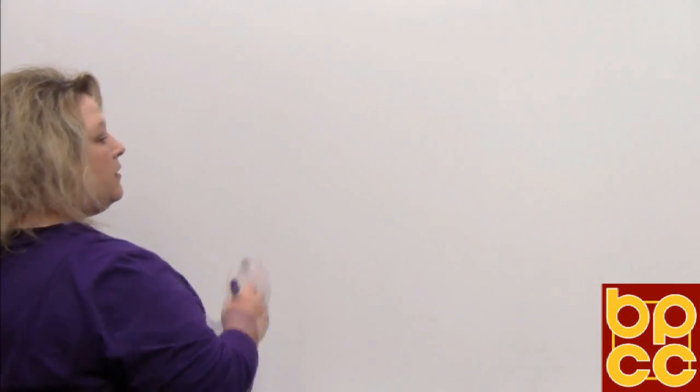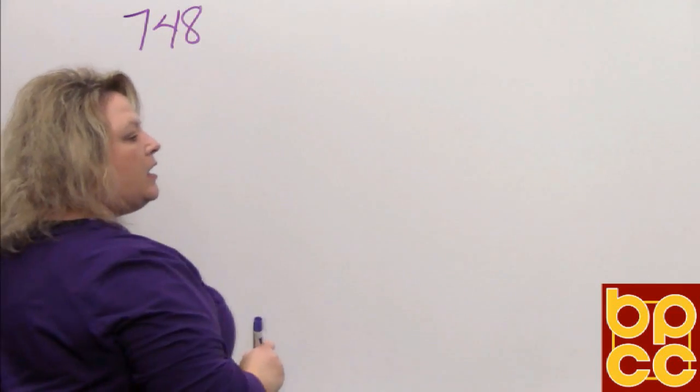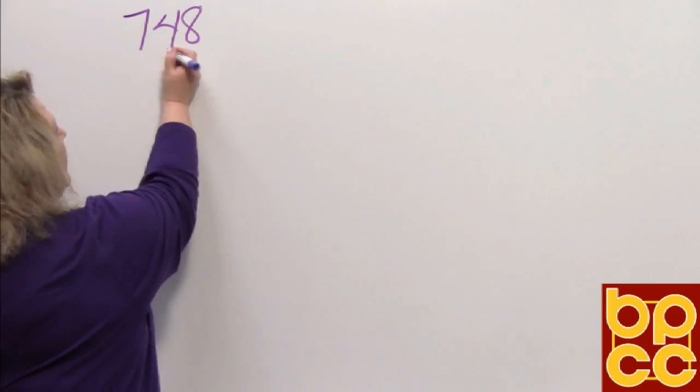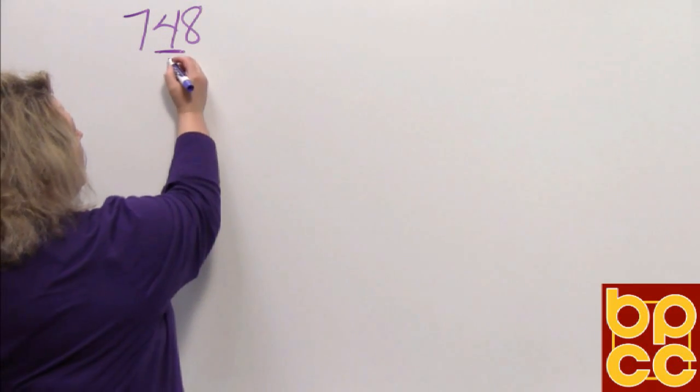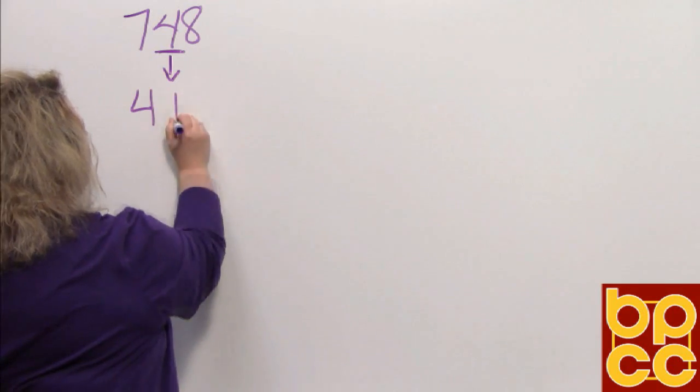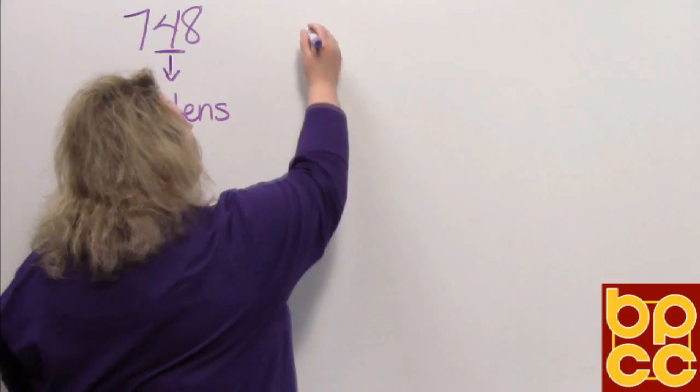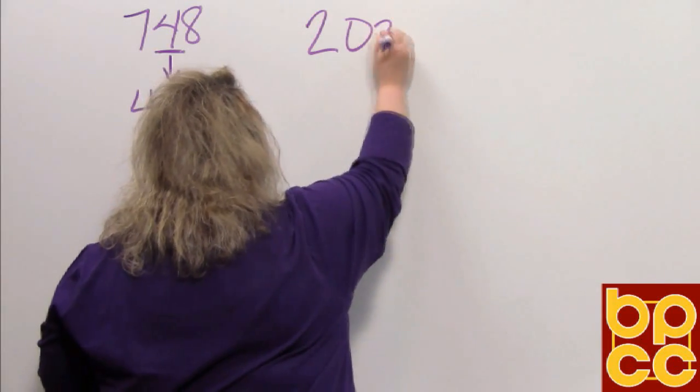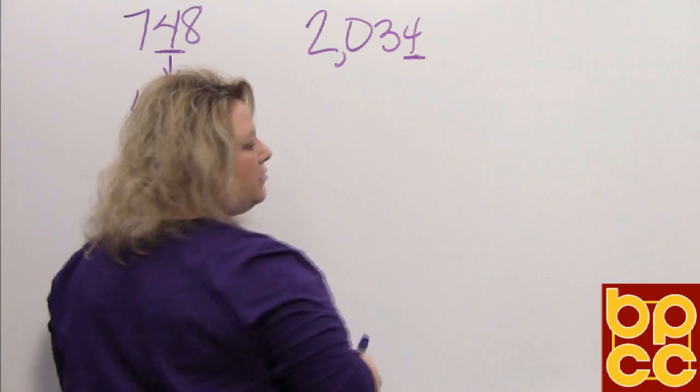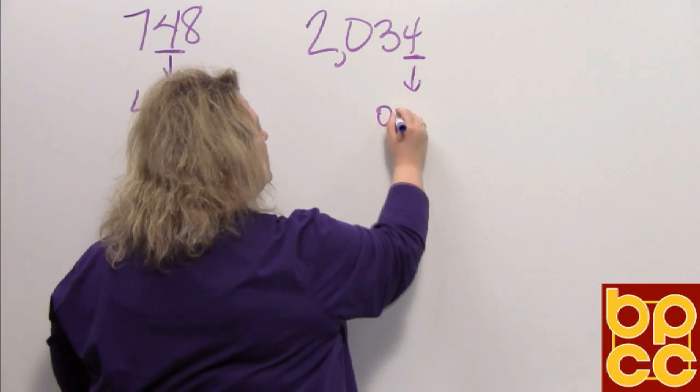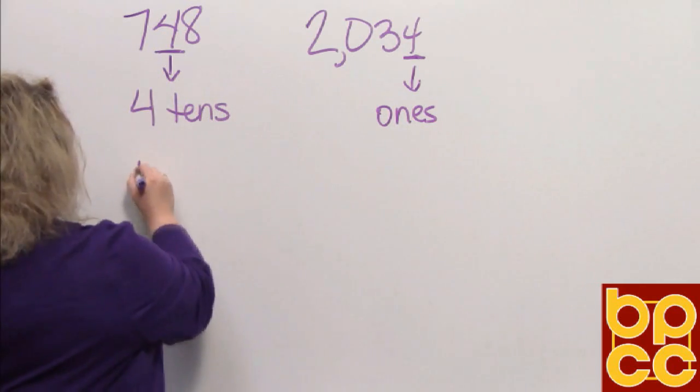The first number that we're going to do is 748. In the number 748, the four is the digit that is underlined. So according to place value, this is four tens. That is four groups of 10. The next number is 2034. And this four is underlined. This four is in the ones or the units place.